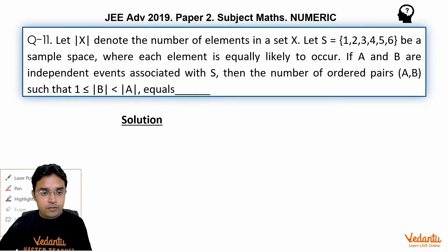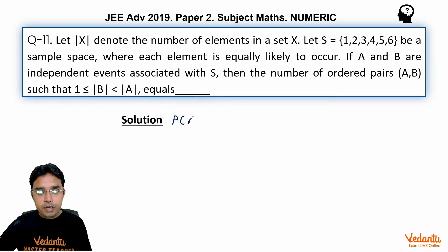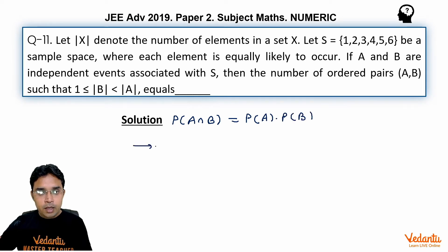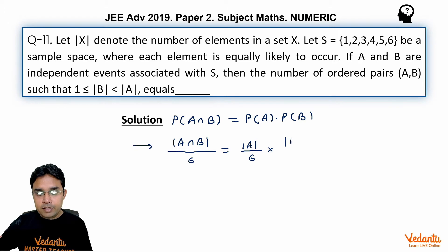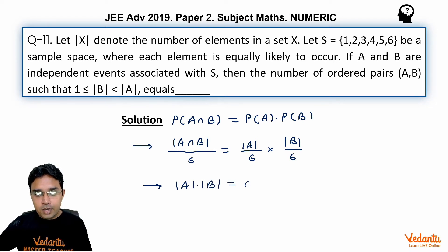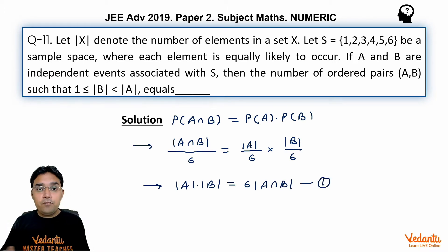Since A and B are independent, P(A ∩ B) = P(A) · P(B). Using the formula for probability, this becomes |A ∩ B| / 6 = (|A| / 6) · (|B| / 6), which simplifies to one key equation: |A| · |B| = 6 · |A ∩ B|. This equation must be satisfied for all valid possibilities of |A| and |B|.